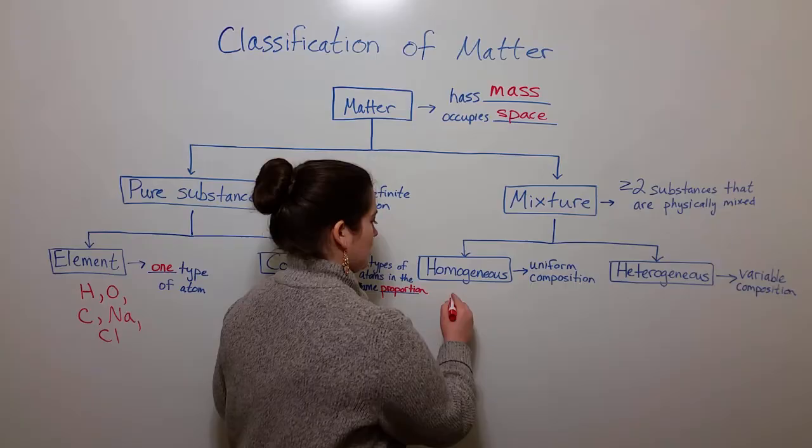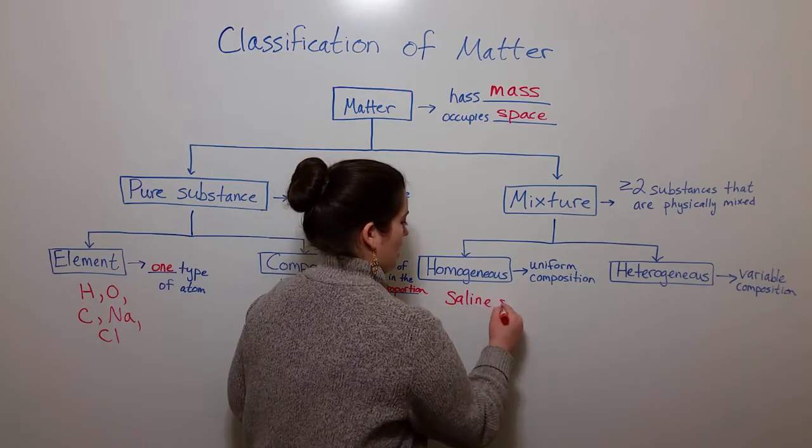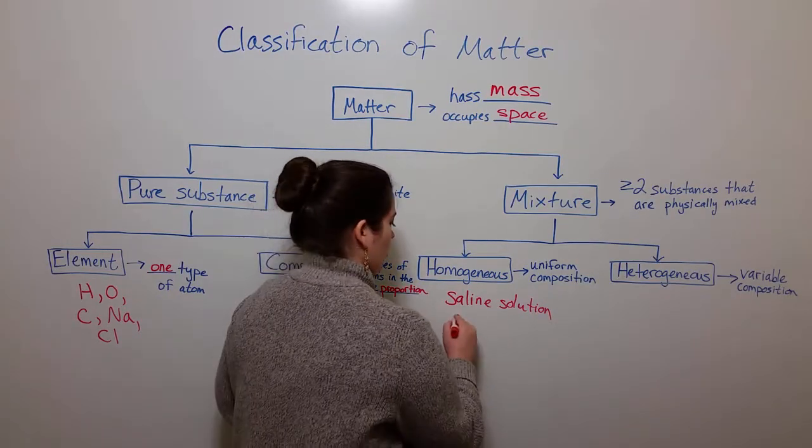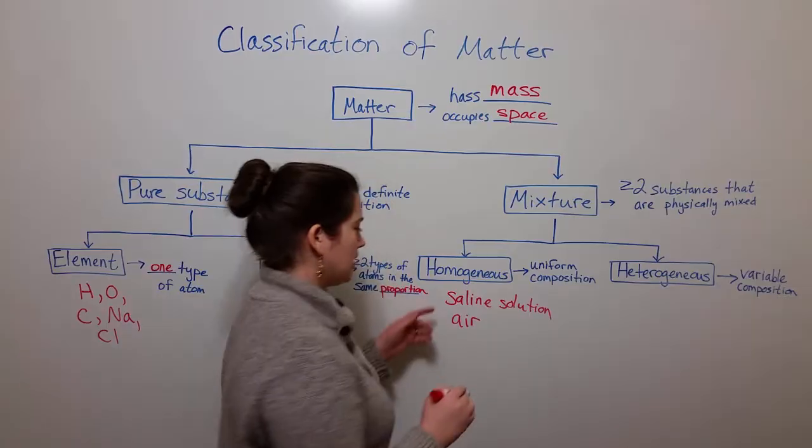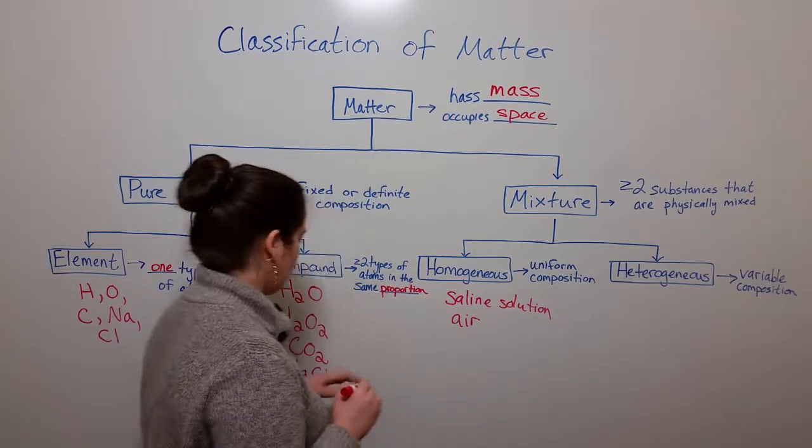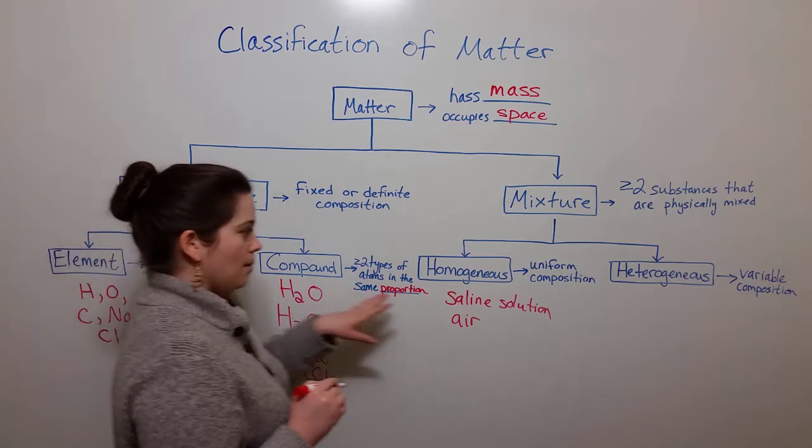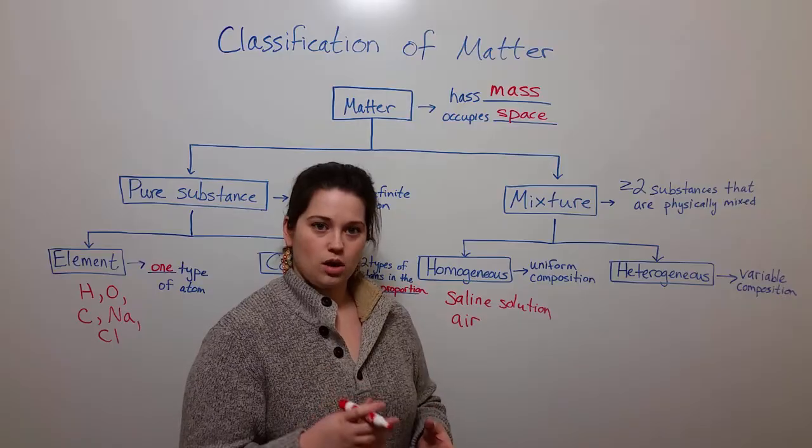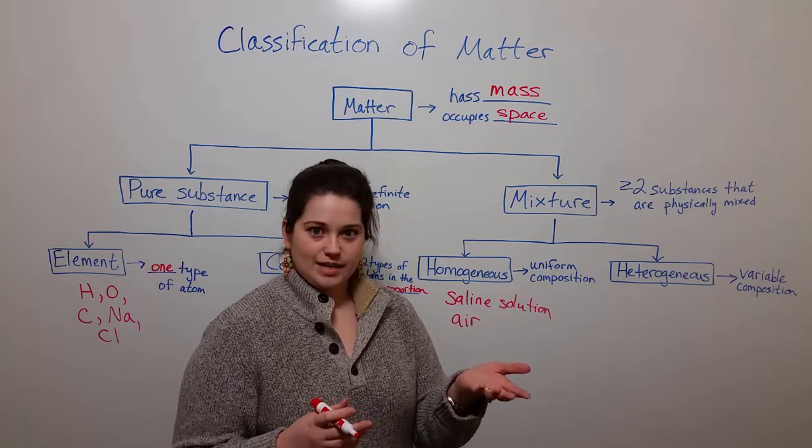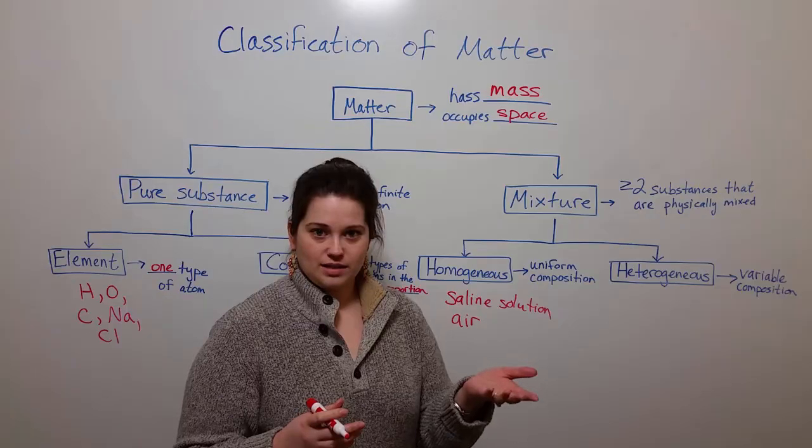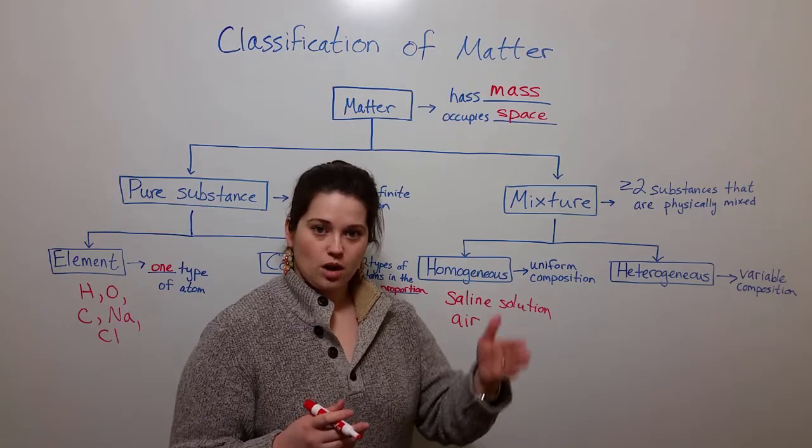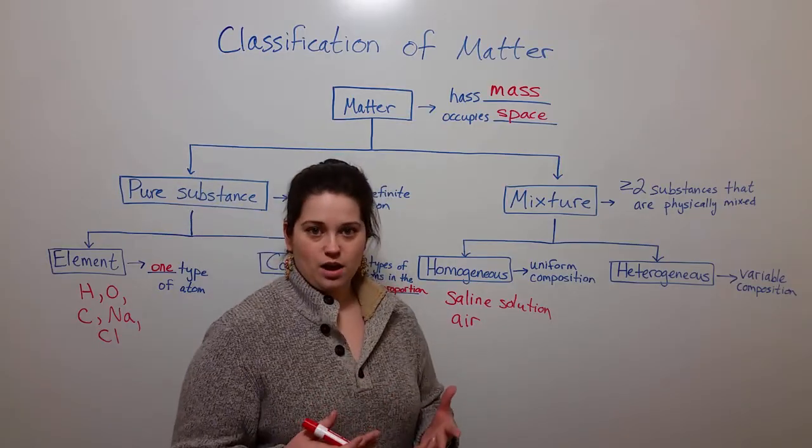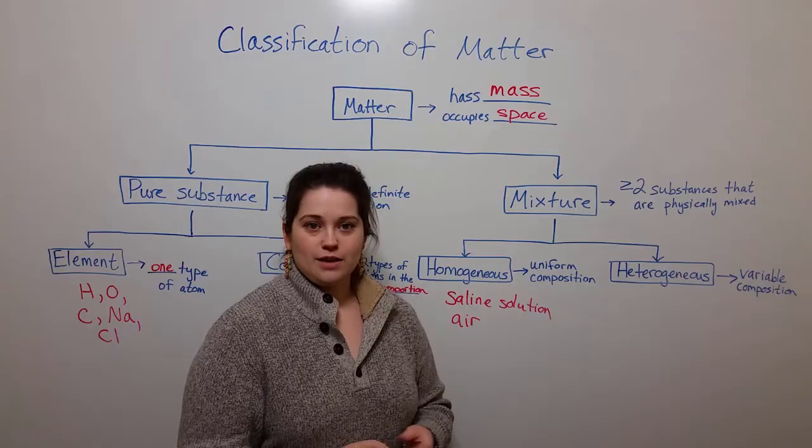This includes things like the saline solution that you may put your contacts in at night, also things like the air that we breathe. So saline solution is made of sodium chloride and water, but in a uniform composition. This means that the sodium chloride is dissolved in the water, and just in looking at the saline solution, you cannot distinguish those two different components. It all looks like an even mixture. Air is the same way. We can't see air,